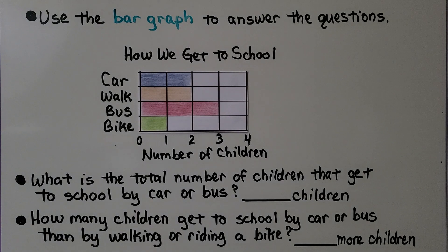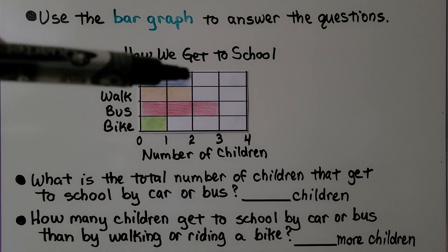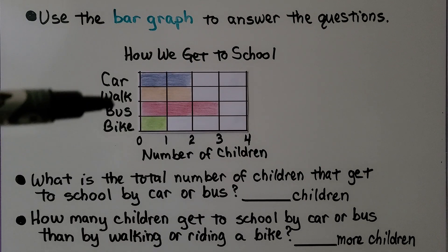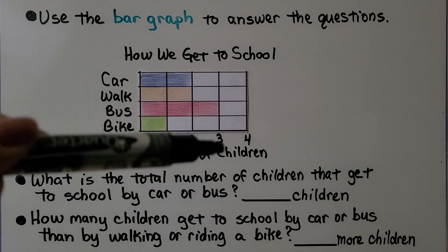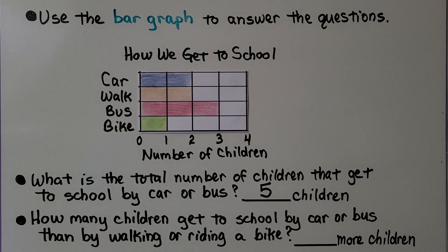So what is the total number of children that get to school by car or bus? Well, we look at car and we see car is two. We look at bus and bus is three. So we would add two plus three. Two plus three is equal to five. That means five children get to school by car or bus.